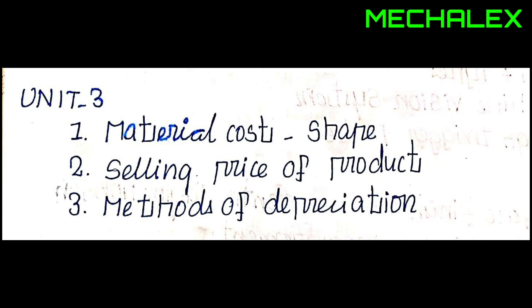The second one is the selling price of a product — there are almost 2 to 3 numerical problems. The third question is methods of depreciation. Depreciation is a quality — if you have a TV for 5 years it will be in working range; after 10 years there will be some depreciation. Methods include the sinking fund method, annuity method, etc.